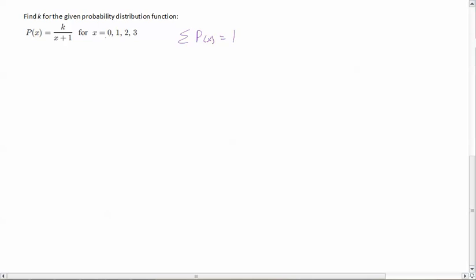So the probability when x equals zero is k over zero plus one plus k over one plus one, right, because I put one in for x plus k over two plus one plus k over three plus one. Now if I add each of those probabilities together, it should add up to give me one. So that means I've got k over one plus k over two plus k over three plus k over four, which means to add up together to give me one.